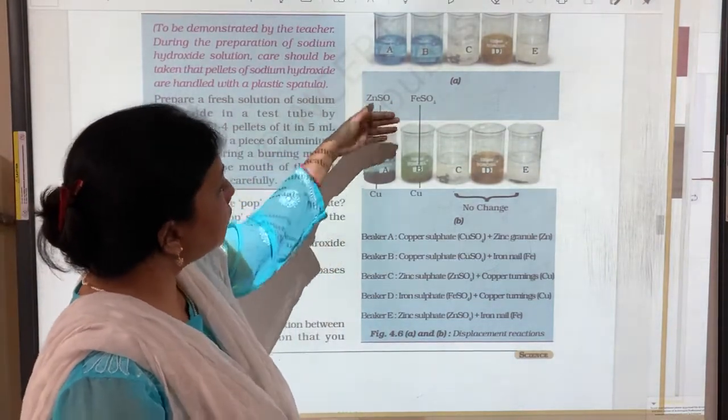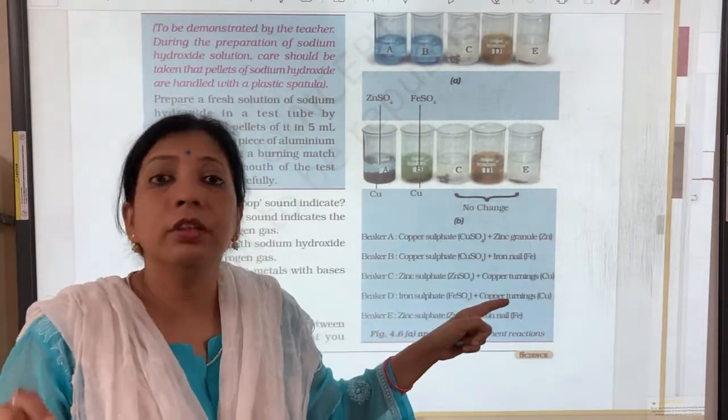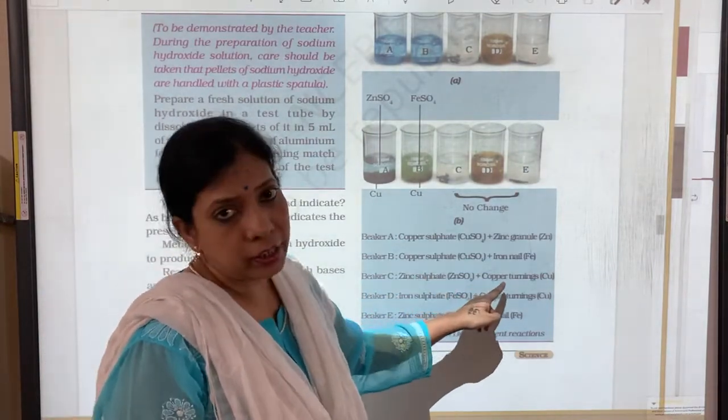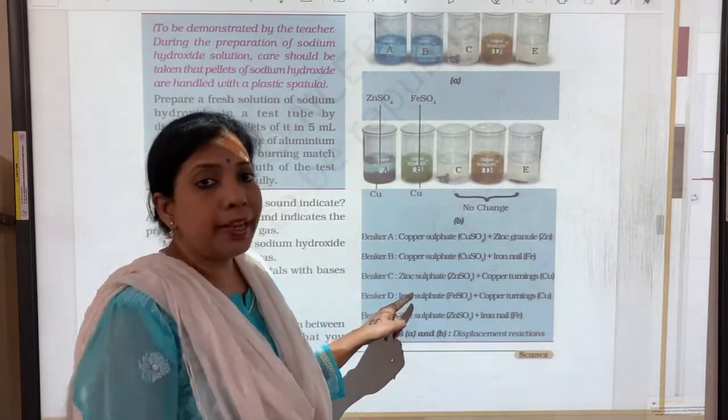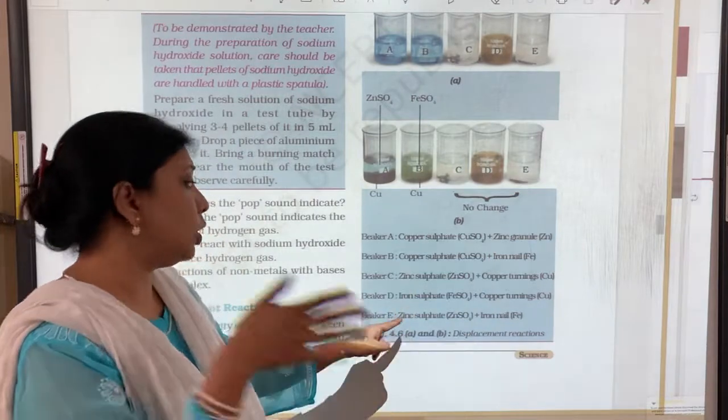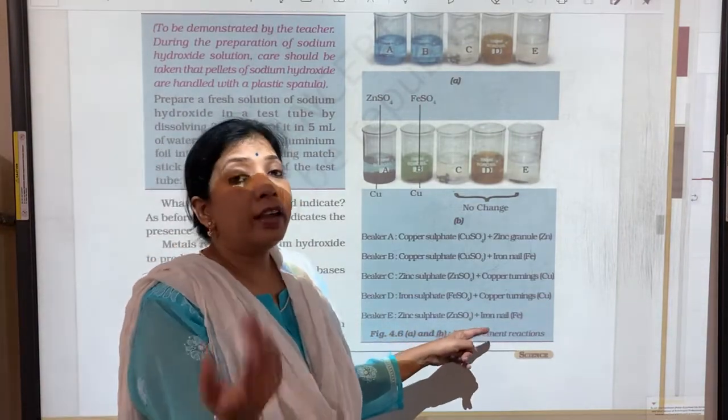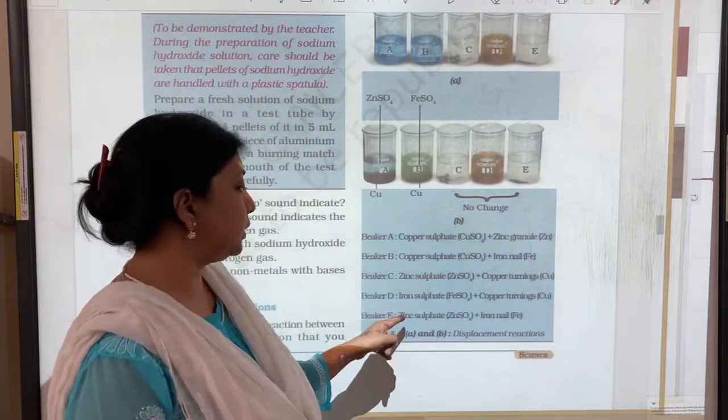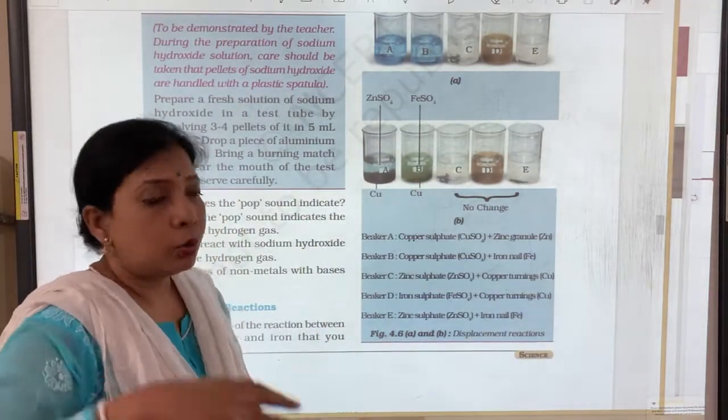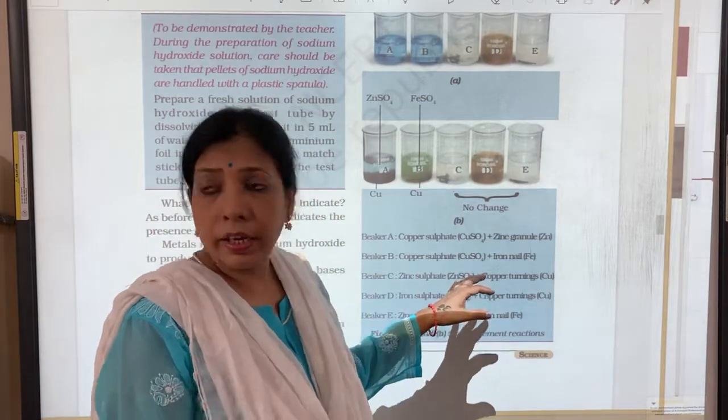Similarly, iron is more reactive than copper and that is why the colour of the solution changed. Here zinc and copper no change means zinc is stronger than copper. So copper could not replace zinc and there is no change. Iron sulphate and copper, copper could not displace iron. There is no change. In the last one zinc sulphate and iron, iron also could not displace zinc and hence there is no change.